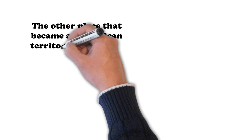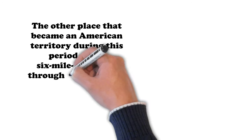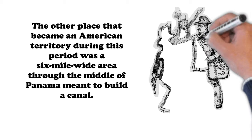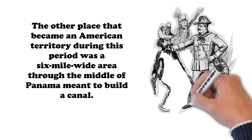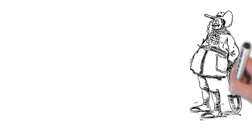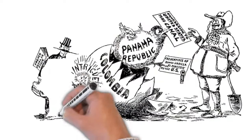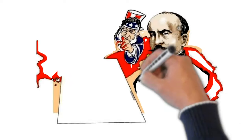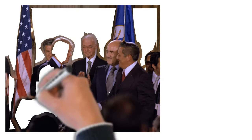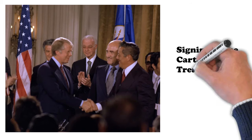The other place that became an American territory during this period was a six-mile-wide area through the middle of Panama, meant to build a canal. Originally negotiated with Colombia, Roosevelt became upset at increased Colombian demands, so in 1904 he hatched a plan where American support for a Panamanian separatist movement single-handedly brought about the Republic of Panama, then renegotiated a more favorable treaty with the Panamanians. Known as the Hay-Bunau-Varilla Treaty, it originally stipulated the canal area would be American land in perpetuity, but the U.S. would eventually return the territory to the Panamanians in 1977 under the Carter-Torrijos Treaty.